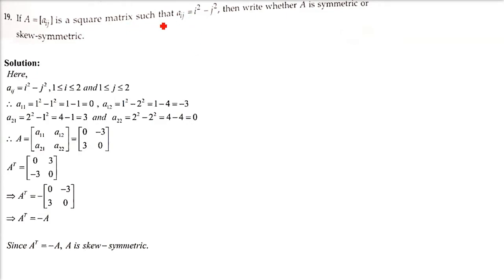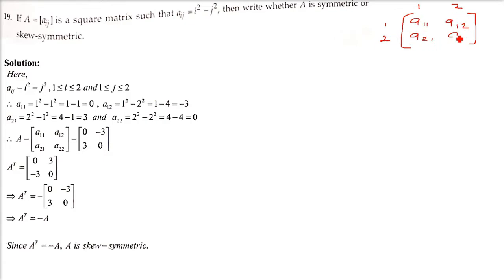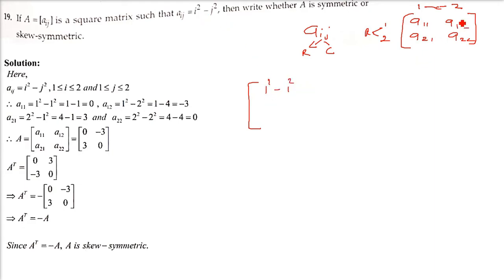We assume a 2 by 2 matrix and will prove from there. For a 2 by 2 matrix we write A11, A12, A21, A22, where the first subscript is the row number and the second is the column number. Substituting into Aij = i² - j², we get: A11 = 1²-1², A12 = 1²-2², A21 = 2²-1², A22 = 2²-2².